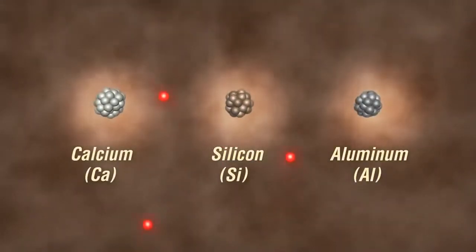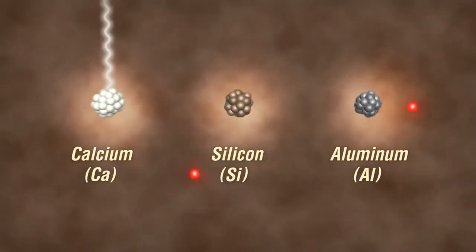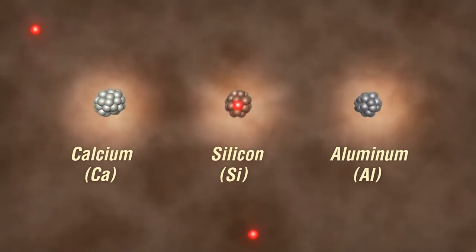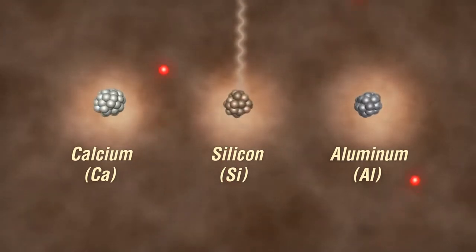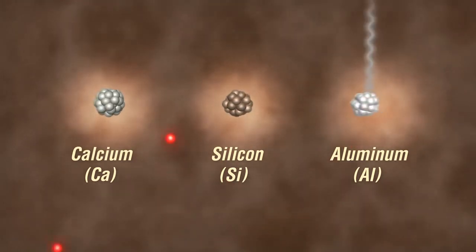For example, calcium, silicon and aluminum each have different and unique gamma ray energies associated with them and can be differentiated from each other.